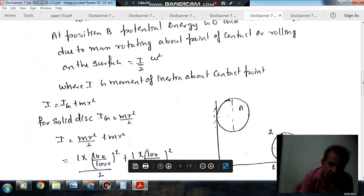So at this position, the disk is rolling. Rolling is rotation about the point of contact. Okay.